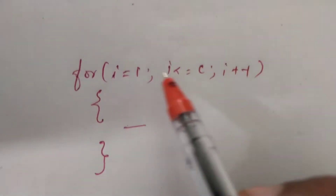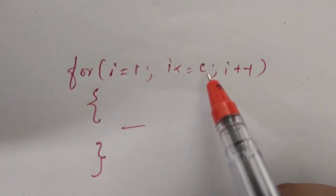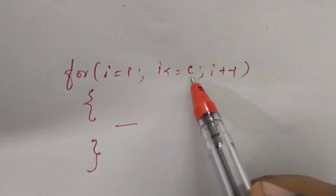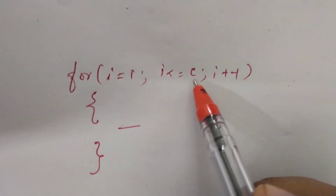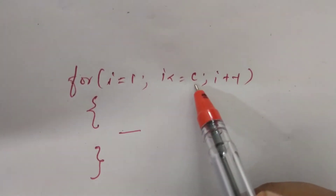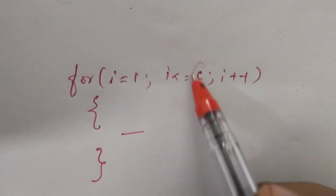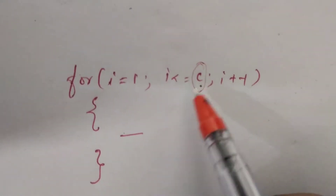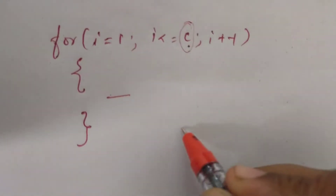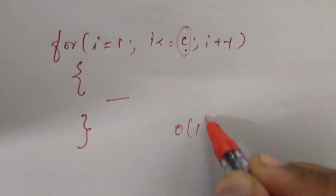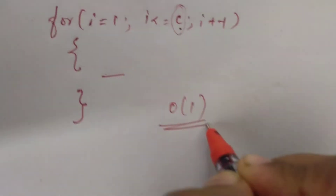Let's look at this loop. If it executes a constant number of times, we will see order of 1.